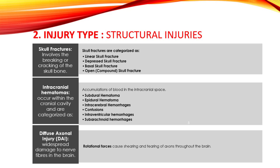Intracranial hematomas include subdural hematoma where blood collects between the dura and arachnoid mater, epidural hematoma where blood accumulates between the skull and the dura mater, and intracerebral hemorrhages where blood pools within the brain tissue itself with a size of more than one centimeter. Contusions are bruised areas of brain tissue resulting from the impact of the injury.